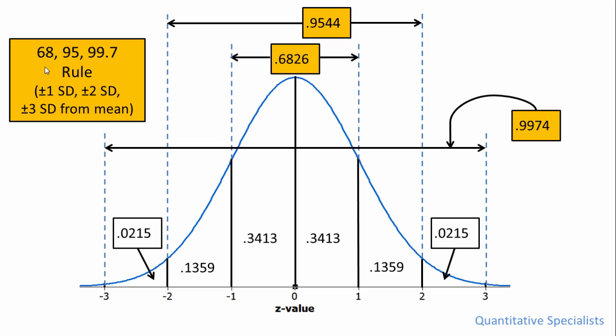So once again, this is referred to as the 68-95-99.7 rule, and it's important to note that it only applies to a normal distribution or a bell-shaped or Gaussian curve.